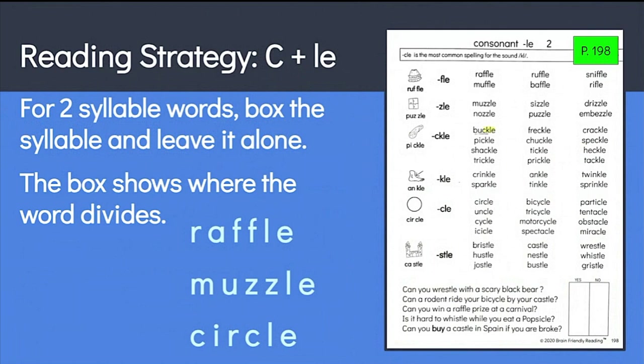the simplest way to divide the word is to box the final syllable and then leave it alone. So instead of drawing a line to divide the syllables like we do in other words, the box indicates that it is a separate syllable and shows where the word divides. So for the following words, we would box the consonant LE, say the sound, then read the syllable before it with the final syllable.